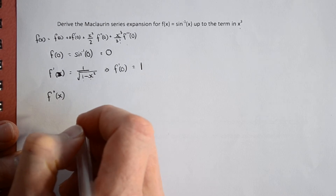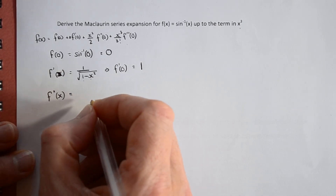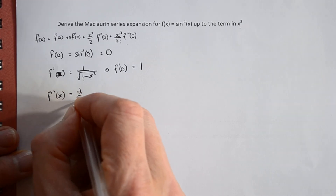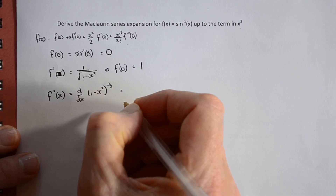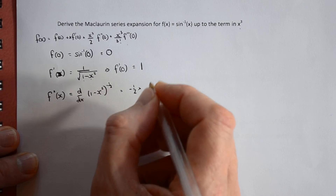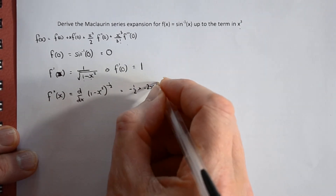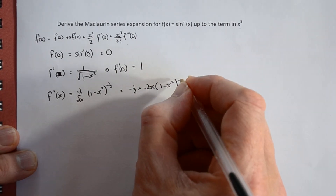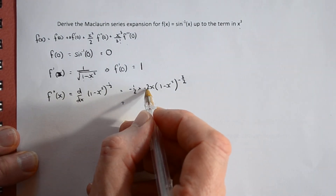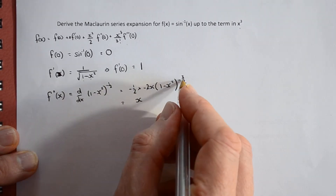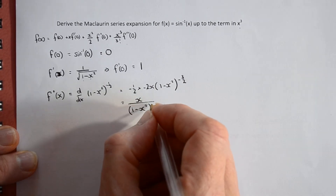For the second differential, we'll find it and then sub in zero. If we write the first derivative as (1 minus x squared) to the power of minus a half, we can use the chain rule more easily. We multiply by the power, then by the differential of the bracket — which is minus 2x — then the bracket stays the same and we reduce the power by one. The minus half times minus 2 gives 1, so we get x over (1 minus x squared) to the power of positive three halves.